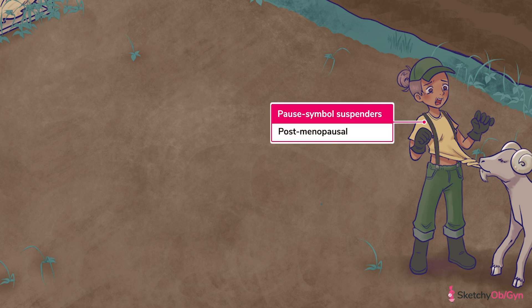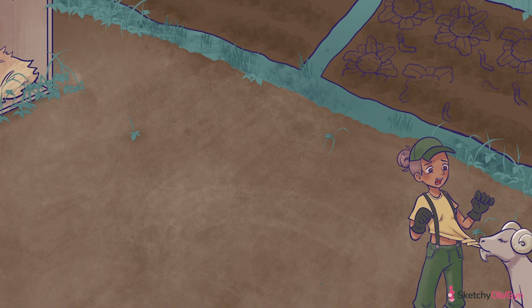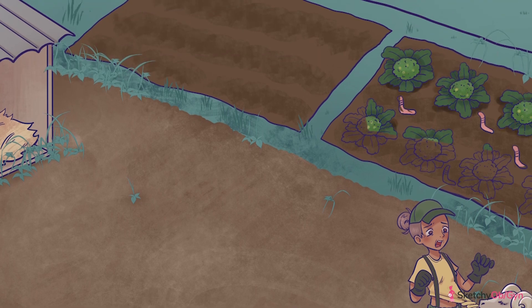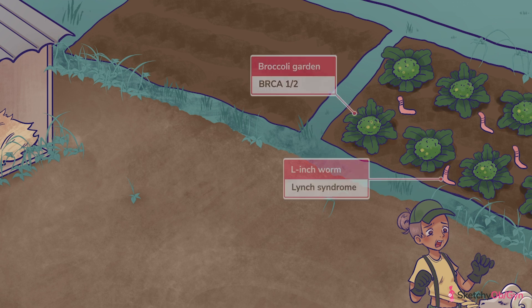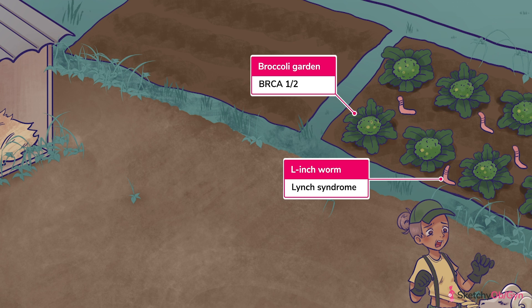Patients that are older are more likely than younger patients to have an ovarian malignancy. Usually patients are stratified as pre- and post-menopausal, which we'll remind you of with these pause symbol-shaped suspenders. In addition to age, a family history of ovarian or breast cancer may clue you into an inherited cancer syndrome due to a genetic mutation. The genes BRCA1 and 2, represented with our recurring inchworms, are associated with elevated ovarian cancer risk.